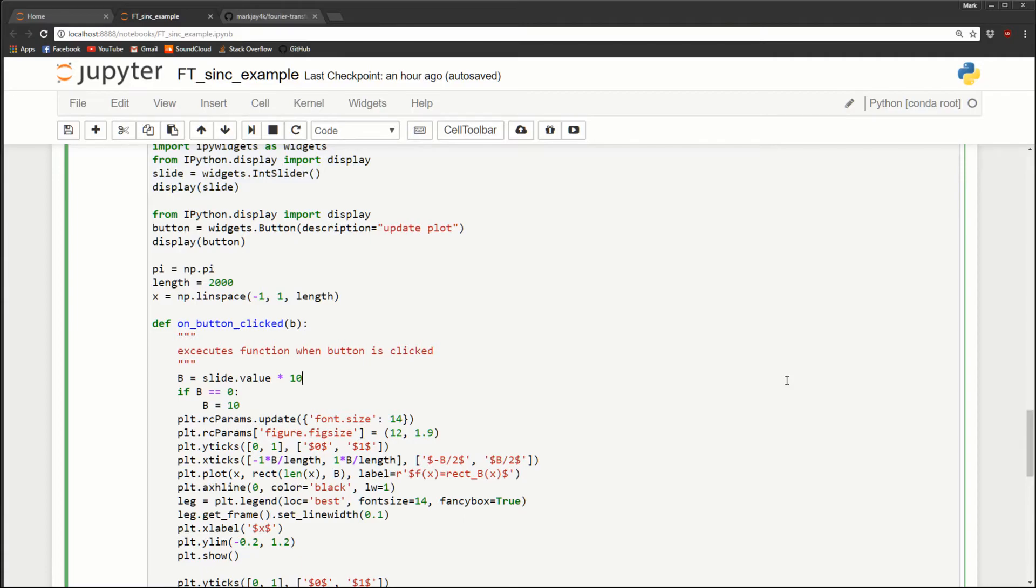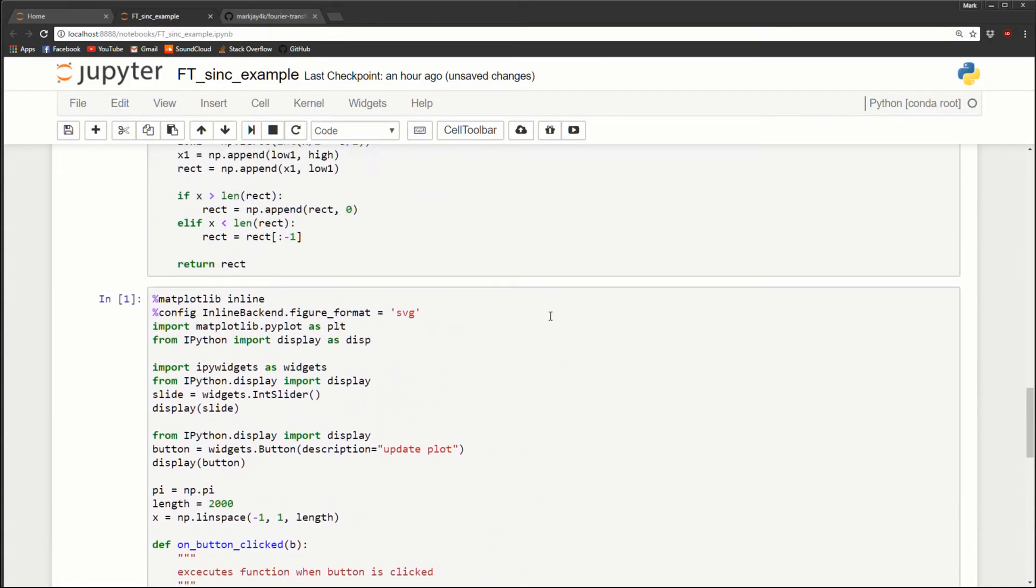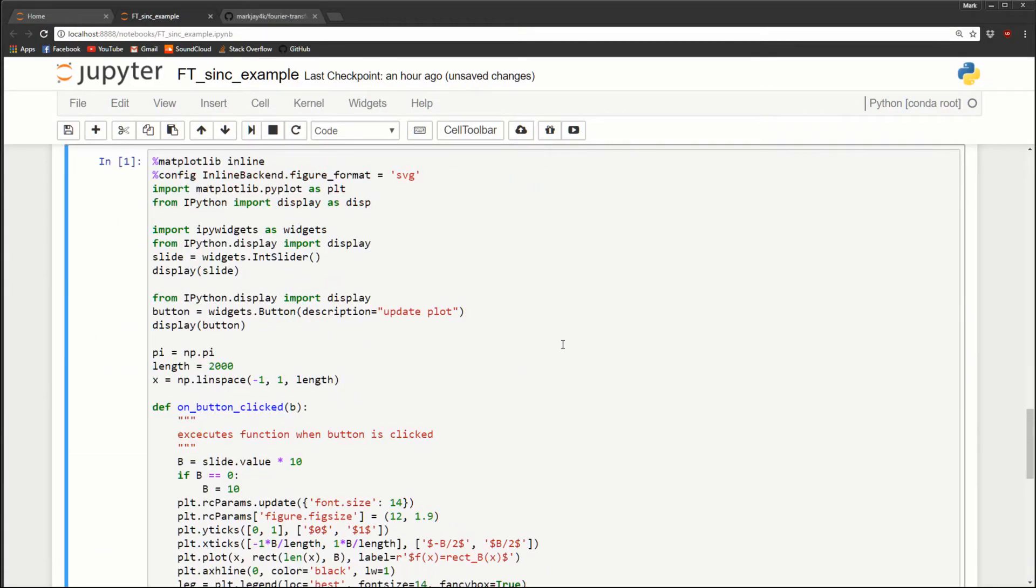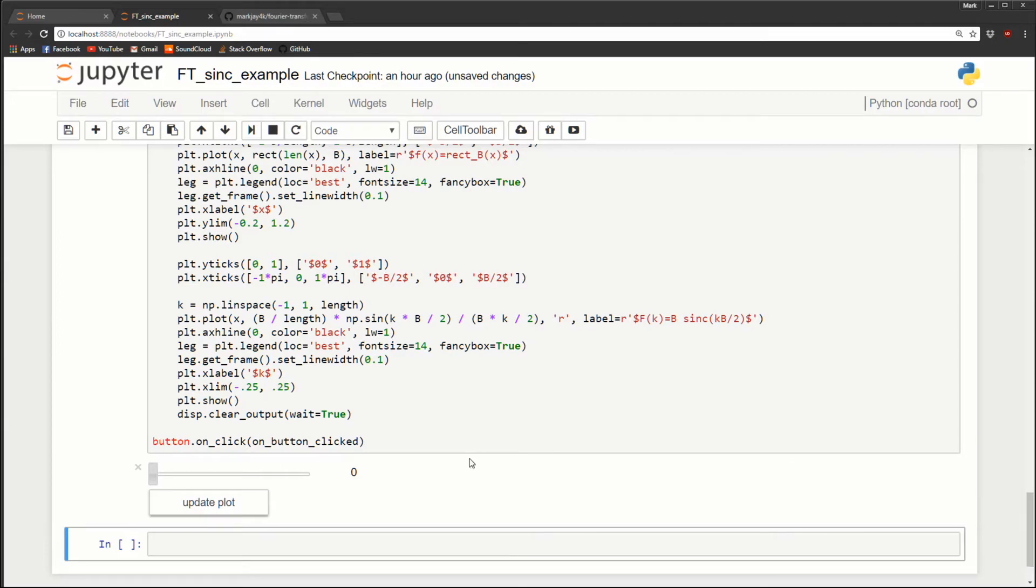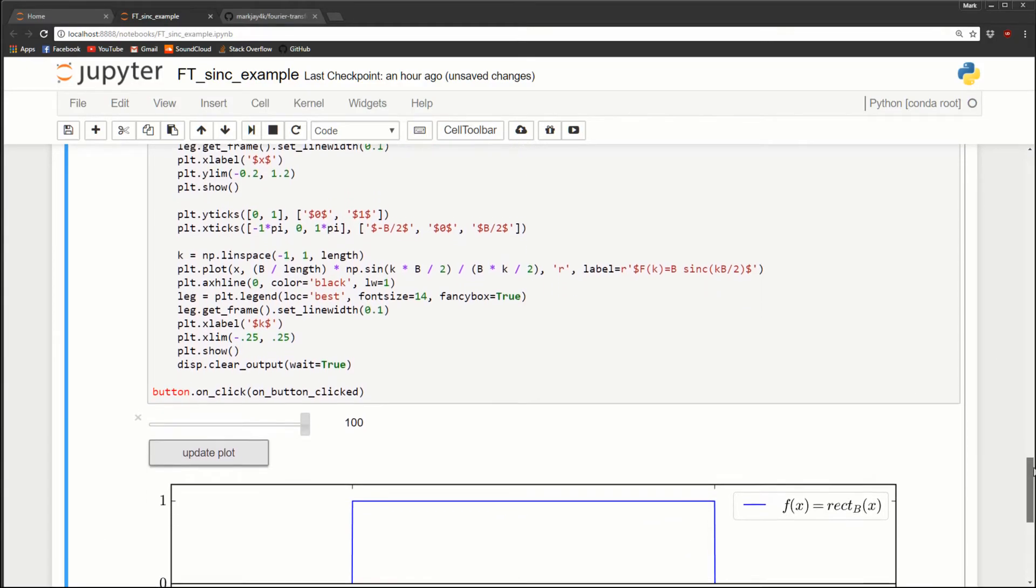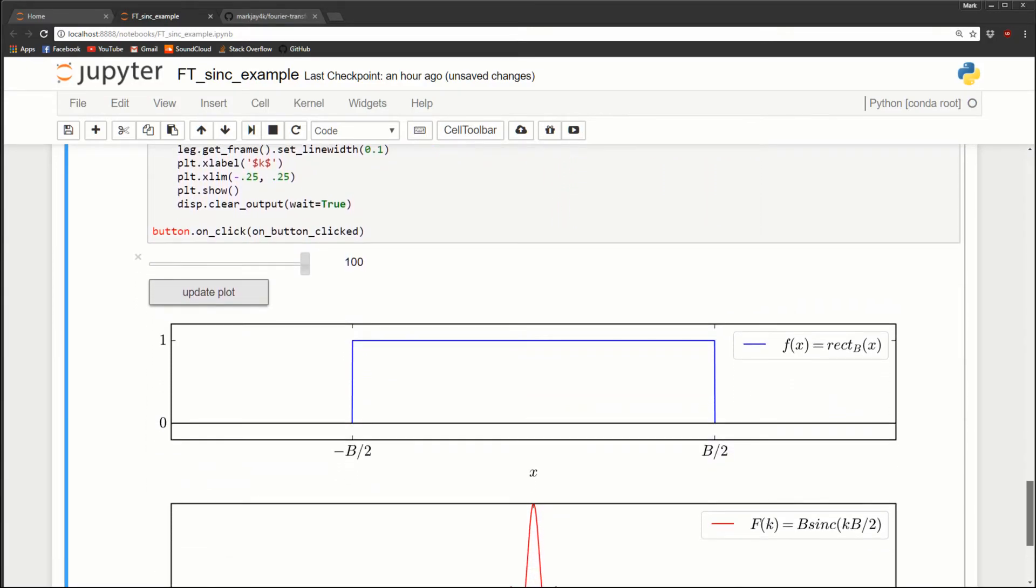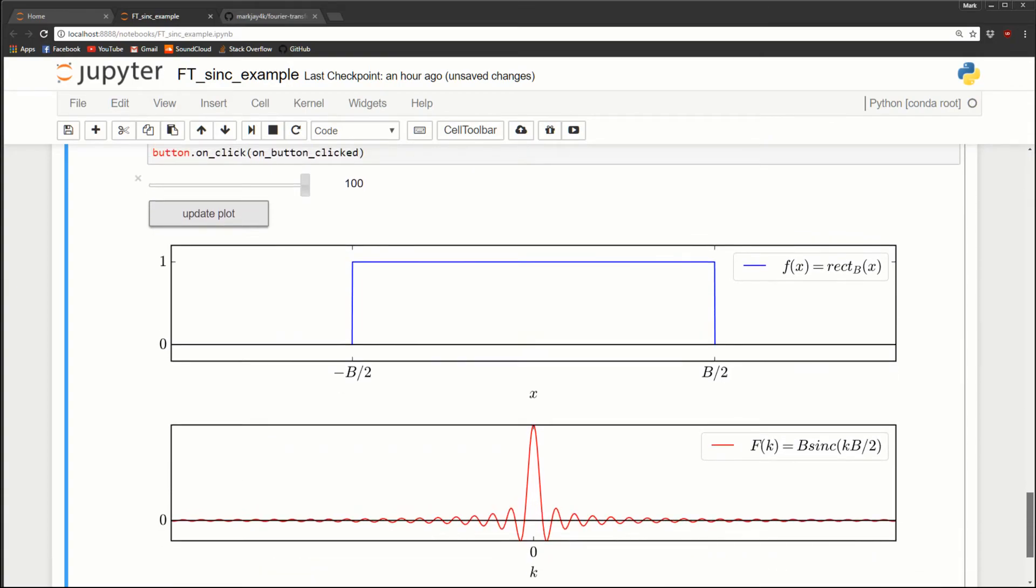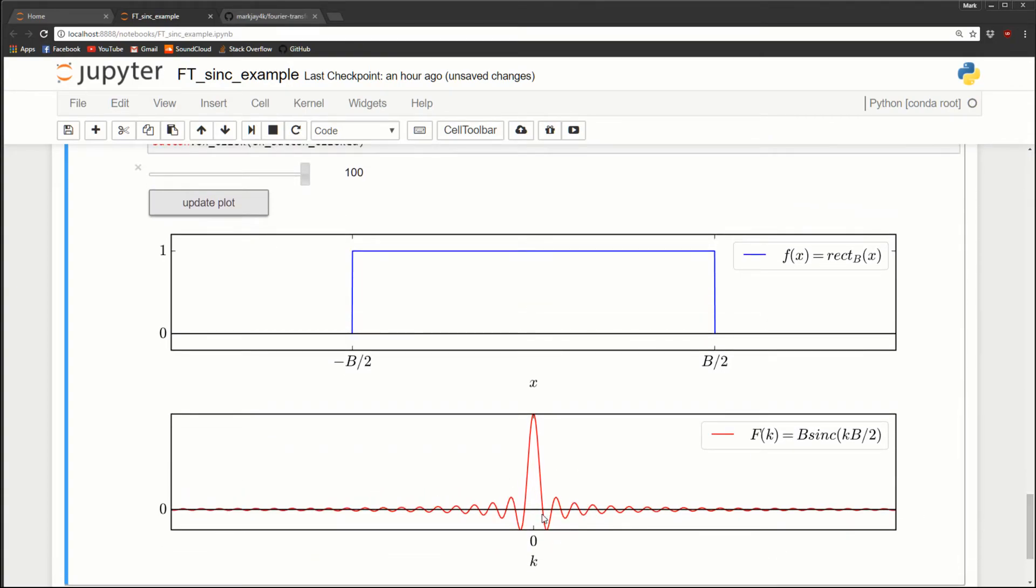which is the sinc function. When I run this cell, oops, I need to run the cell too. Now when I run it, you'll see that I have two widgets, this slider is for b. And then I have a button that just updates the plot. If I make it as big as I can, you'll see that our rect function is really wide, which means it's very broad. But then our transform is very compact. You can see this thing's rippling and damping out very fast.